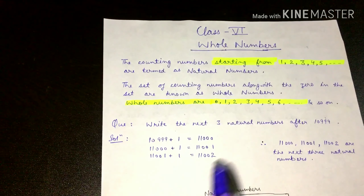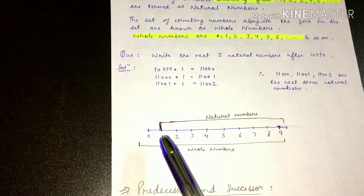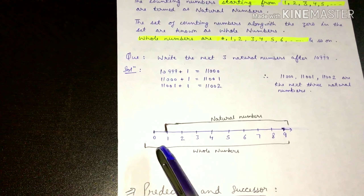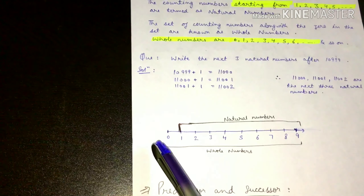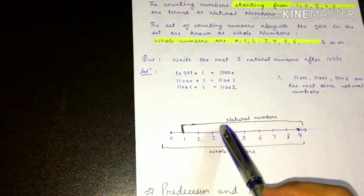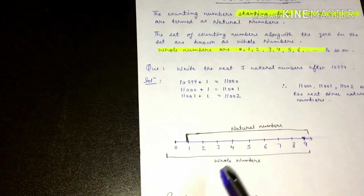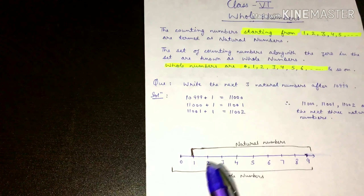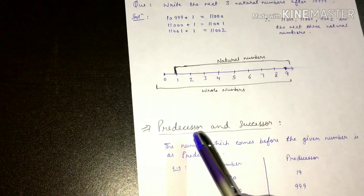So these three are the next natural numbers after 10999. On the number line, we start from 0 for whole numbers and from 1 for natural numbers. If we include 0, we get whole numbers. This was the introduction about whole numbers and natural numbers.